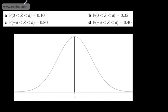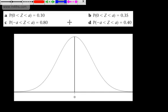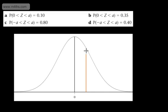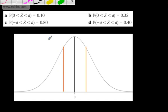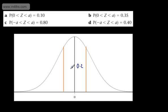Let's do the last one. The probability now that Z is between negative A and positive A is going to be 0.4. What we're going to have then is an area, and this is going to be 0.2 on each side. We're symmetric about 0.